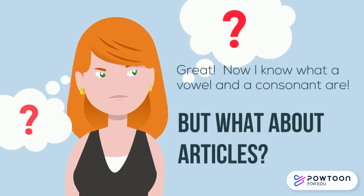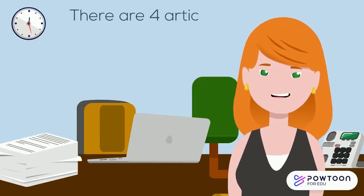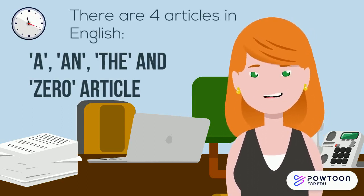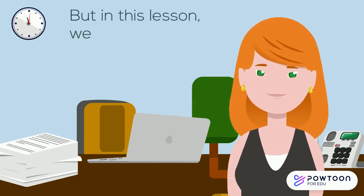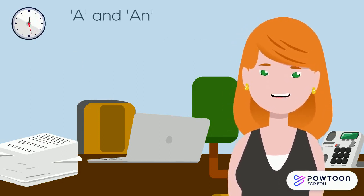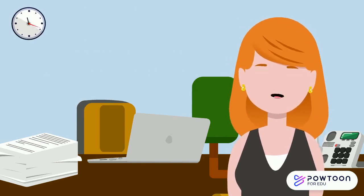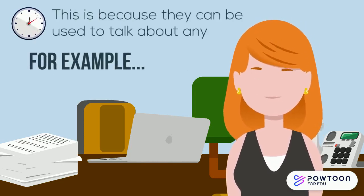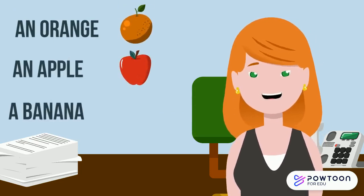But what about articles? There are four articles in English: A, AN, THE and ZERO article. But in this lesson, we are talking about A and AN. A and AN are known as indefinite articles. This is because they can be used to talk about anything — for example, an orange, an apple, a banana.